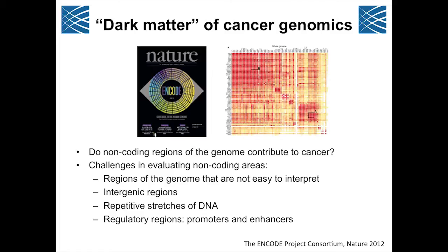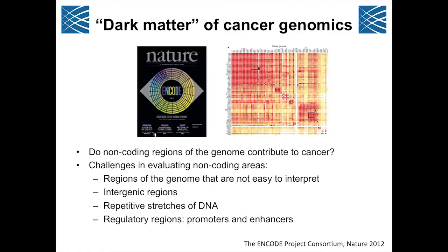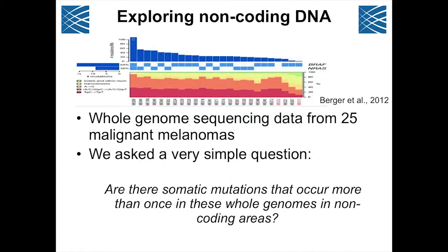We do know something — actually quite a lot — from basic science research performed on promoters and enhancer areas. Recent papers using systematic approaches to understand non-coding regions of the genome will be very informative. What we came upon in the lab was a critical mass of whole genome DNA sequencing: 25 whole genomes of malignant melanomas. Using that data, published about a year ago, we asked a very simple question.